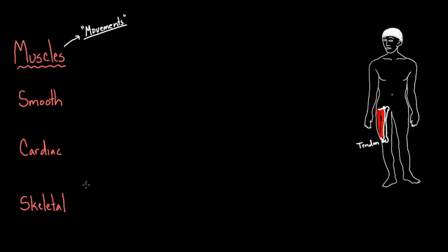This is an example of skeletal muscle. Skeletal muscle is going to be attached to a tendon and bone. That brings up the question: does every skeletal muscle have to be attached to a tendon and bone?